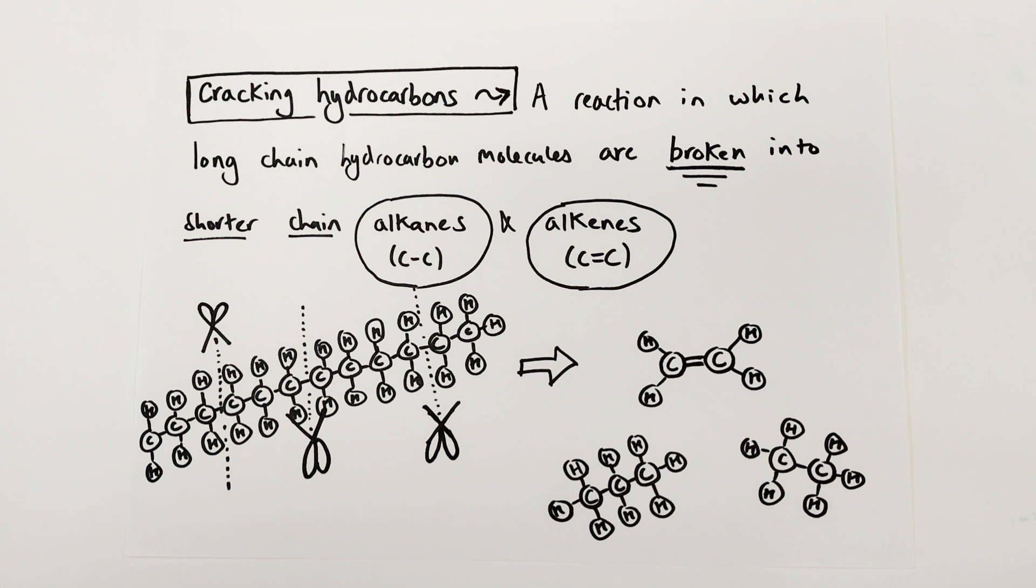So the solution is a process known as cracking hydrocarbons. These are chemical reactions in which long chain hydrocarbons are broken down into shorter chain alkane and alkene molecules. These molecules are in much greater economic demand.